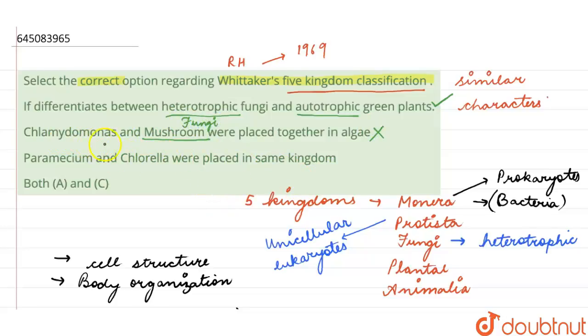Whereas Chlamydomonas is a type of algae, and we have Chlorella which is a type of single-celled algae. And Chlamydomonas and Chlorella were together kept in the kingdom Protista.